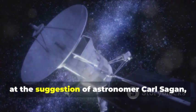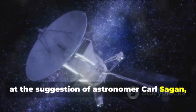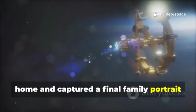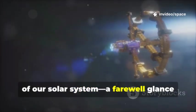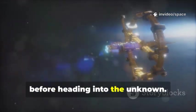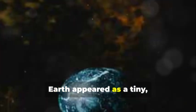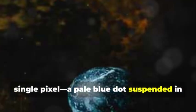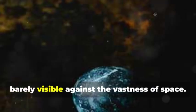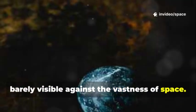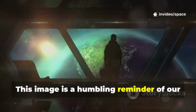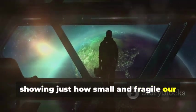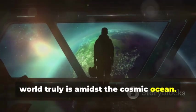In 1990, at the suggestion of astronomer Carl Sagan, Voyager turned its cameras back toward home and captured a final family portrait of our solar system. A farewell glance before heading into the unknown. Earth appeared as a tiny single pixel, a pale blue dot suspended in a sunbeam, barely visible against the vastness of space. This image is a humbling reminder of our place in the universe, showing just how small and fragile our world truly is amidst the cosmic ocean.